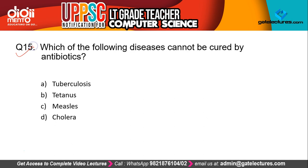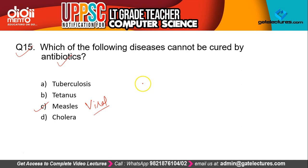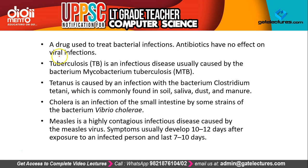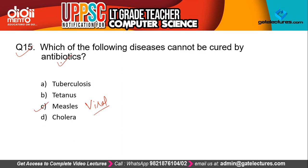Question 15: Which of the following diseases cannot be cured by antibiotics? The correct answer is C — Measles (Khasra in Hindi). Measles is a viral disease, and antibiotics are used only for bacterial infections — they have no effect on viral infections. So if a doctor tells you that you have a viral fever, antibiotics cannot be used for treatment.